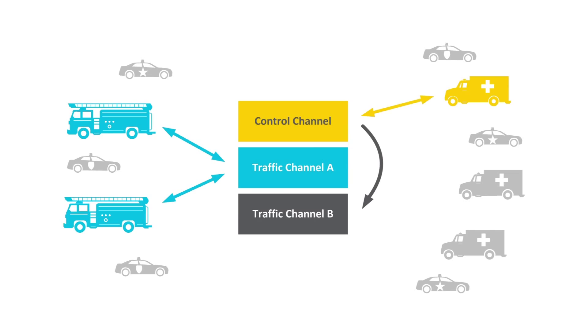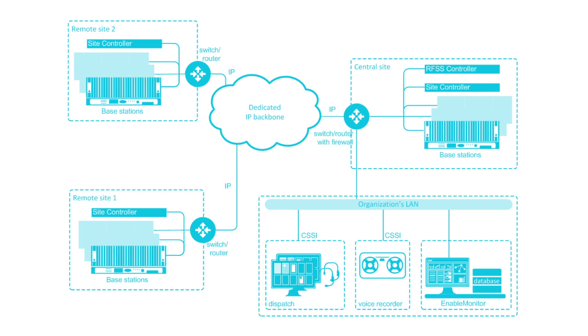When the PTT is pressed on a trunk system, the radio first sends a message on the control channel requesting permission to make a call. The trunk network then responds on the control channel with the ID number of a traffic channel to use for the voice call. This information is received by the calling radio and by all of the radios in the group that were called. All the radios then automatically tune to the traffic channel and the call can take place. This call setup all takes place in less than a second. At this point all the radios are on the traffic channel and the voice is transmitted just like on a conventional radio channel.